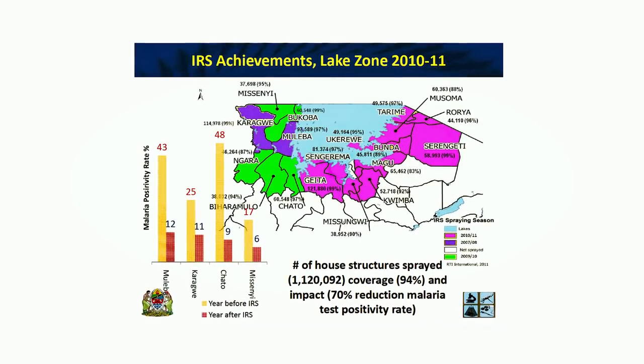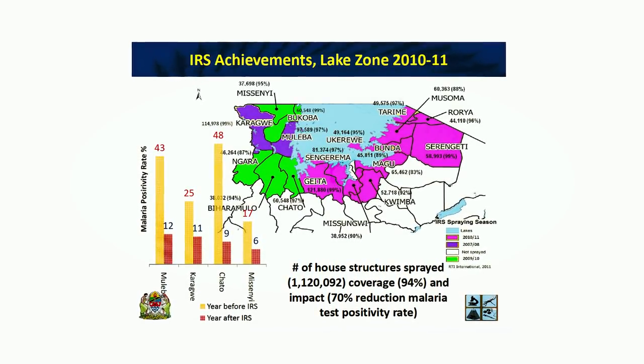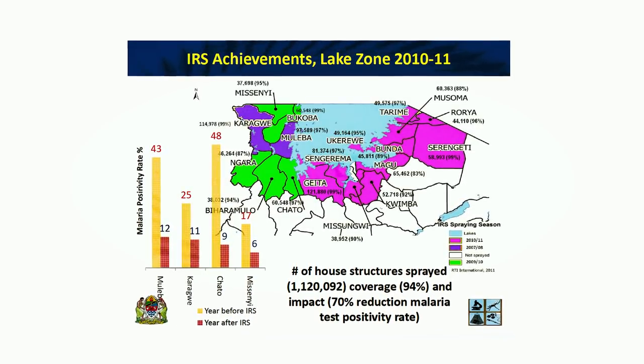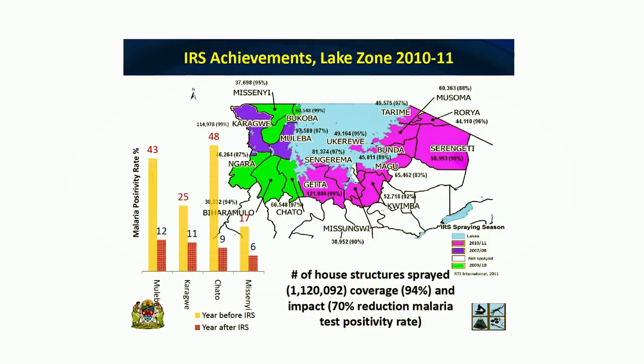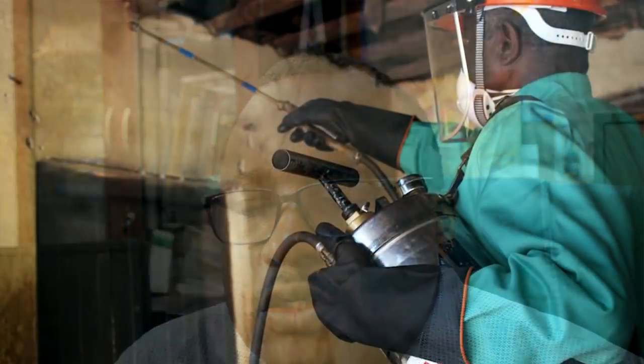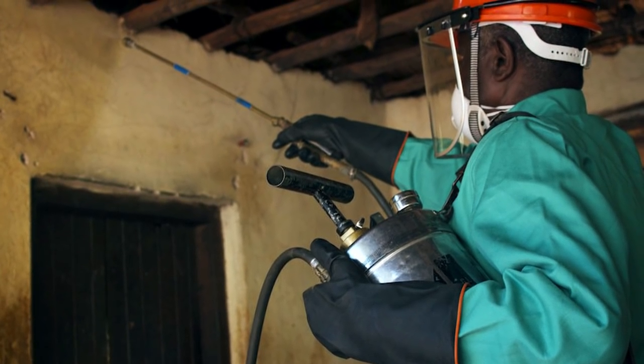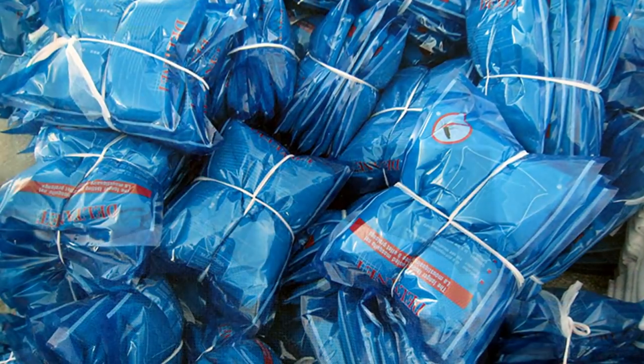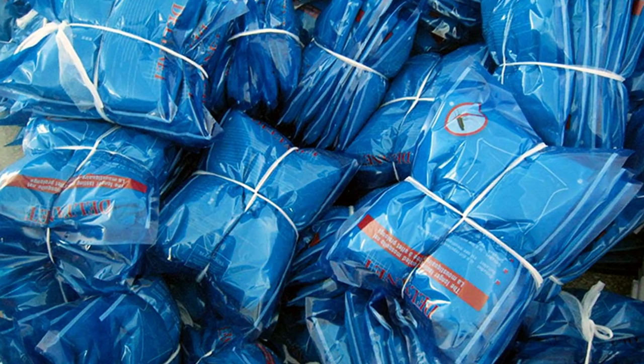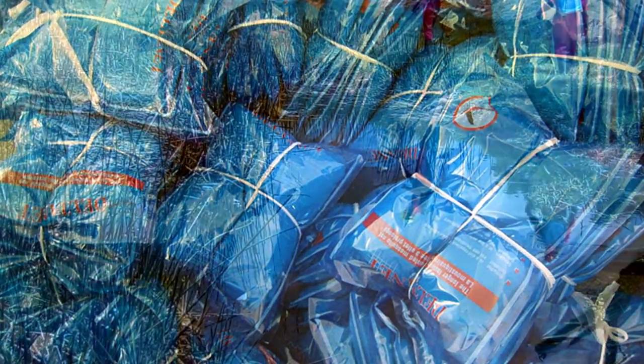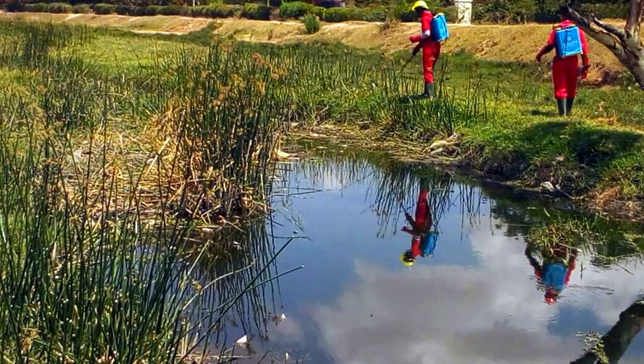Despite successes towards elimination of malaria in Tanzania, there are remaining gaps that must be addressed. Although we have current tools — mainly artemisinin-based combination therapy, integrated vector control including indoor residual spraying (IRS), insecticide-treated nets, and long-lasting insecticide nets — the effects of these interventions are not uniform. We still have areas with persistent infection and resistance to change.